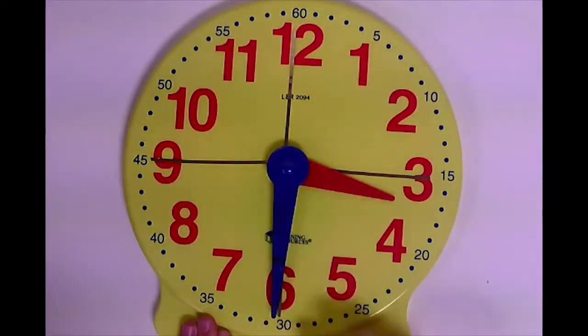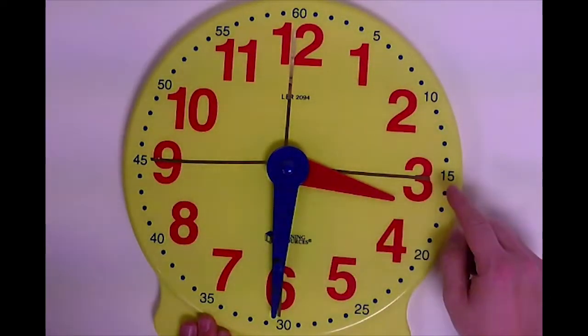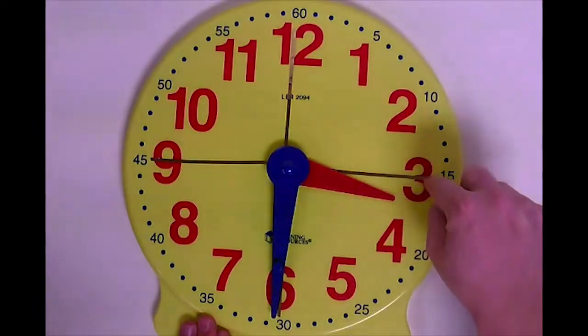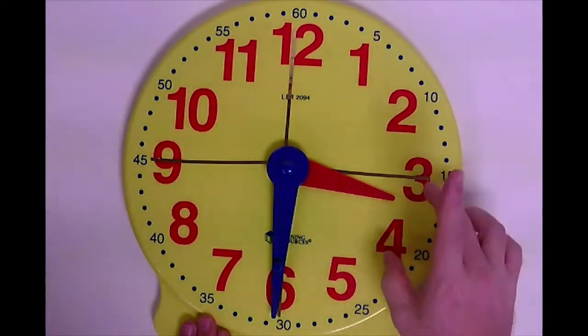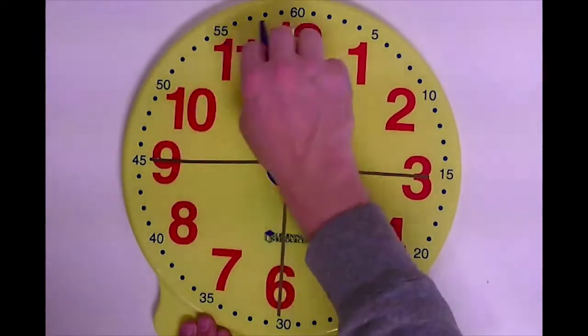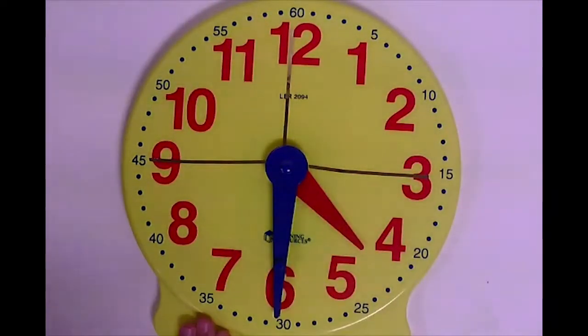So that is one hour. Remember if it's in between two numbers, so it's in between the three and the four, it's always going to be the first number that it's between, or the smallest number. So it's 3:30 right now, one more hour, now it's 4:30.